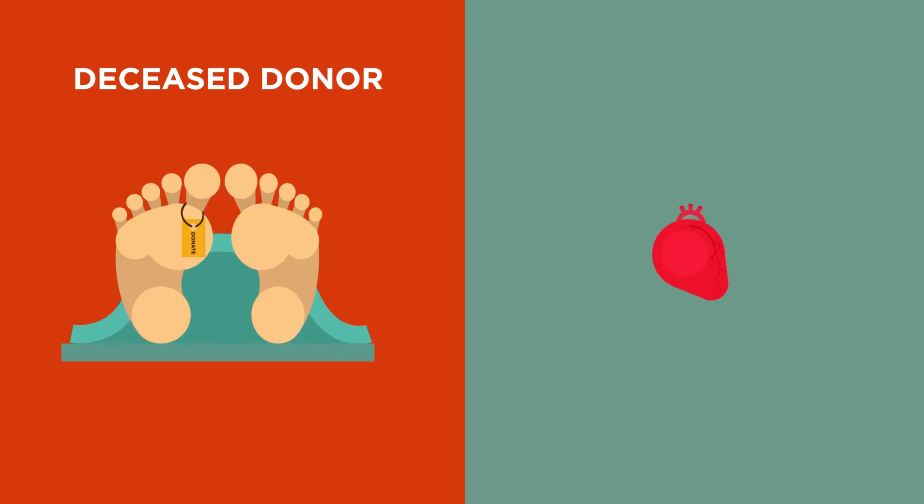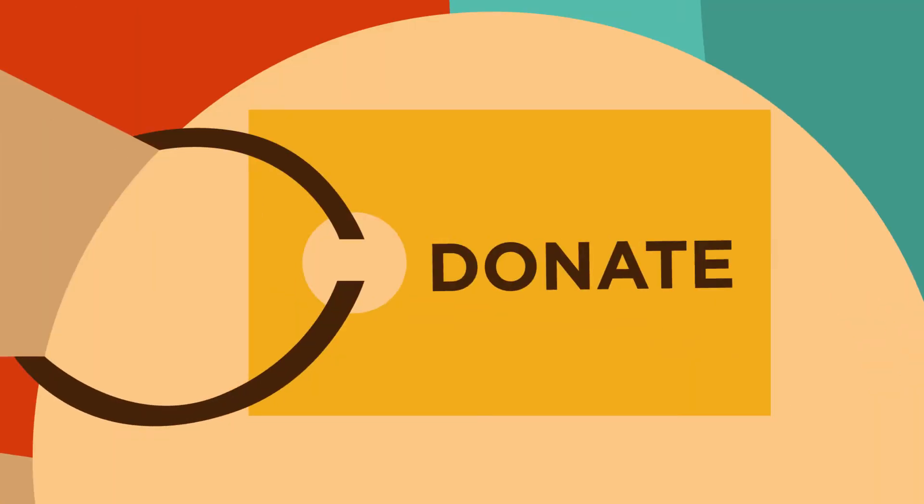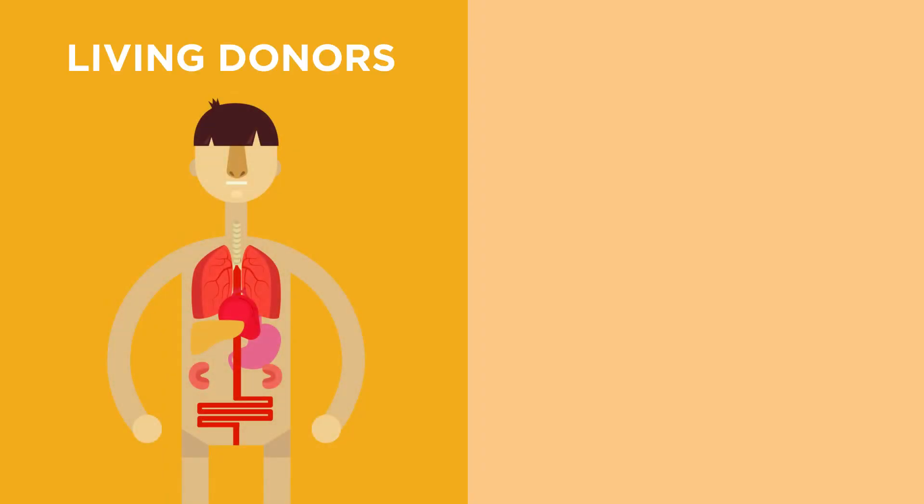The donated organ can either be from a deceased donor, so the donor decided to donate their organs before they died, or from living donors with organs such as kidneys because we have two but can live perfectly well with just one. Same with our liver, we can donate part of your liver.